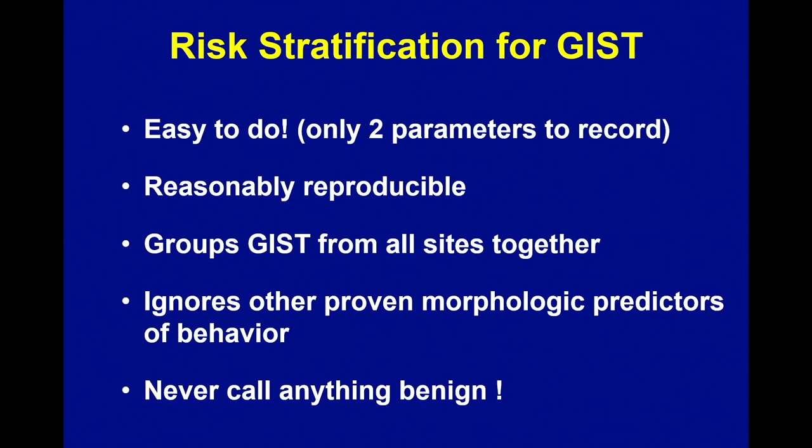Nevertheless, people were still kind of happy to only have to deal with two morphologic items. And the other thing is, you never call anything benign — yet we know there are plenty of clinically benign GI stromal tumors — and instead we now call them very low risk.